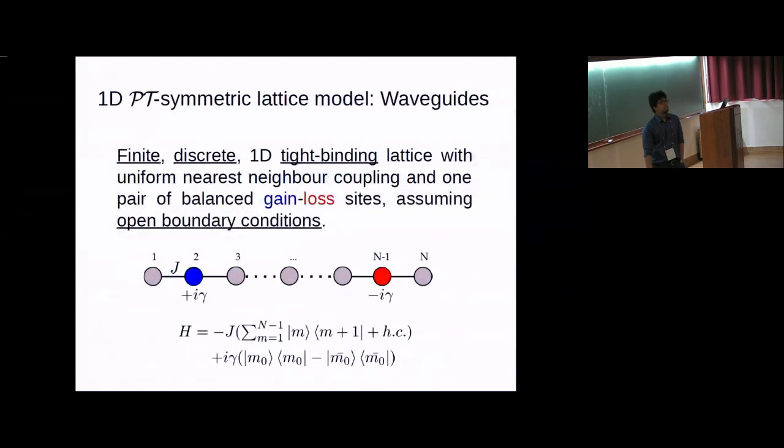When we talk about these 1D tight-binding models, we're keeping in mind optical waveguides or coupled resonators which are coupled to nearest neighbors. We have just introduced one pair of gain-loss impurities. Here's the Hamiltonian for the system. In the z-direction into the board is what is uniform, but we have this coupling constant which is between two sites. The gray ones are the neutral sites, the blue one is the gain site, and the red one is the loss site. We also assume open boundary conditions for this system.